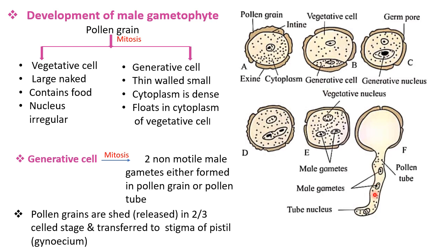A mature male gametophyte in angiosperms consists of a pollen grain, its cytoplasm, two non-motile male gametes, the tube nucleus, and the pollen tube. Pollen grains are generally released at two or three cell stages through the anther, and are then transferred to the surface of the stigma by pollination. In this session we have learned about the structure of the anther, the structure of the pollen grain, and the development of the male gametophyte. The remaining part will be covered in the next session. Bye.